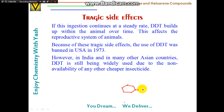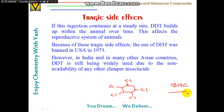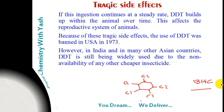One substitute already available for DDT is 1,2,3,4,5,6-hexachlorocyclohexane, also known as BHC (benzene hexachloride).